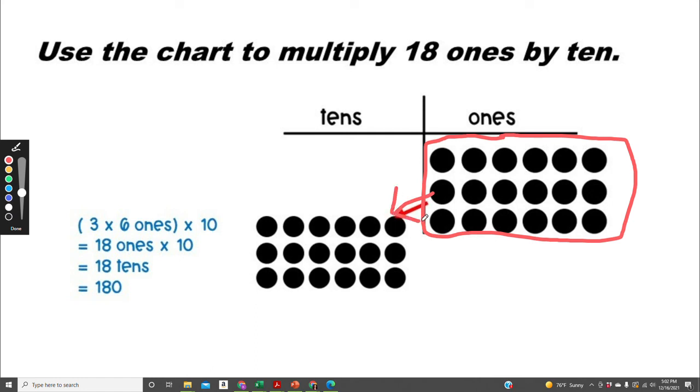We know that 3 times 6 equals 18. And when we multiply anything by 10, we add a 0. So 18 ones times 10 equals 18 tens, or 180.